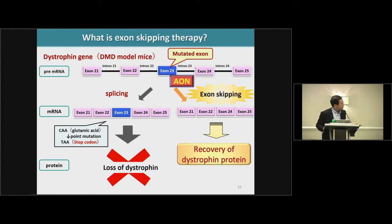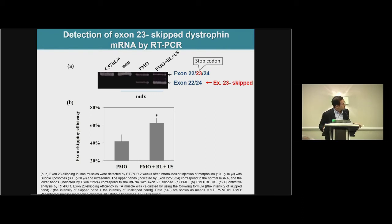If PMO is successfully delivered into the nucleus, exon skipping occurs, leading to recovery of dystrophin protein. This is our first result for detection of exon 23 skipping — exon 23 contains a stop codon in the MDX mouse model. We checked by RT-PCR analysis. As you can see, in the treatment with nanobubble and ultrasound exposure, the exon skipping band is enhanced compared to PMO injection alone.